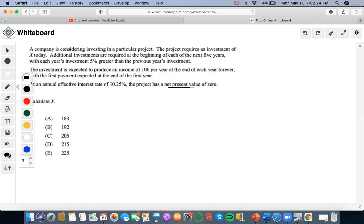The first thing we have to keep in mind is that it says the investment is expected to produce an income of 100 per year at the end of each year forever. If a company is considering investment in a particular project that requires an amount of X today.